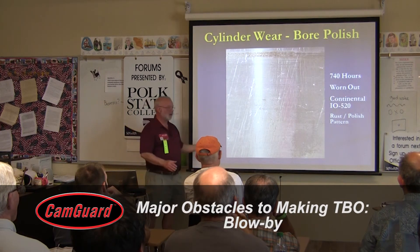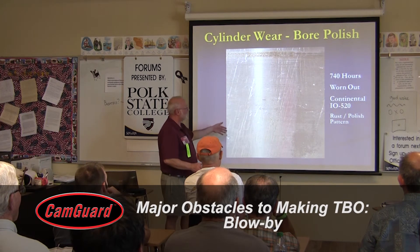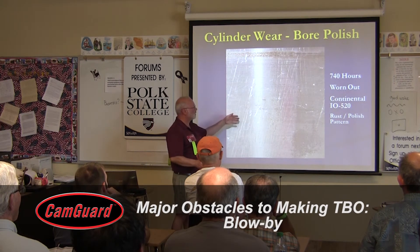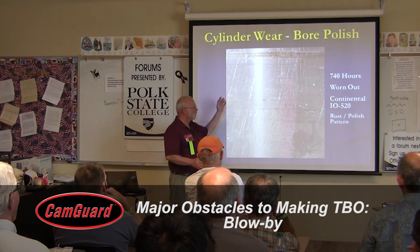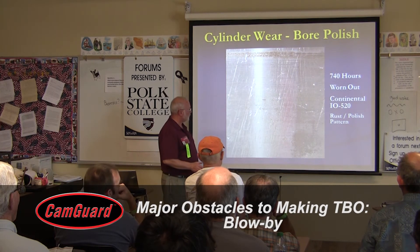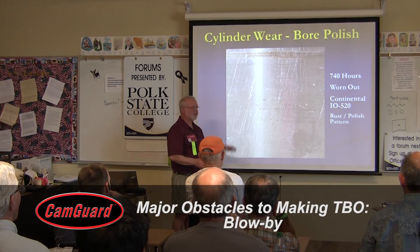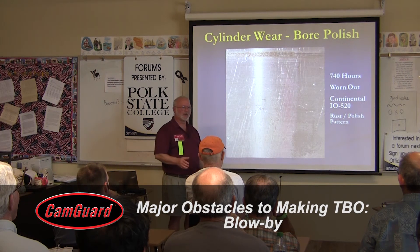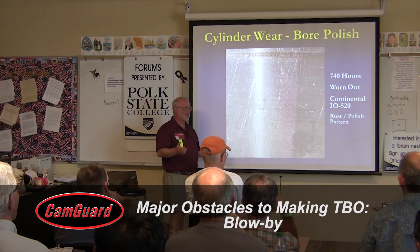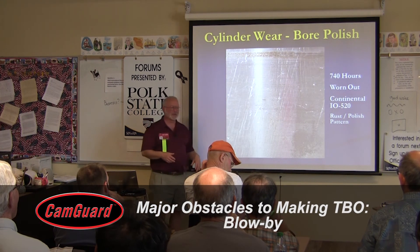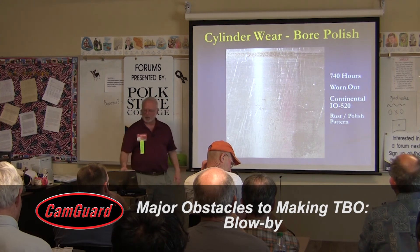Here's an all-too-common example of a rust-polished, worn-out Continental cylinder at mid-time. You can see examples of rust and the cross-hatching is completely gone. The engine is pumping lots of oil, compressions are in the thirties or forties — it's totally worn out.